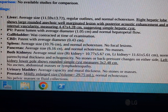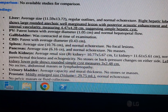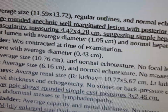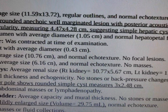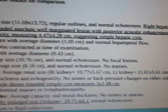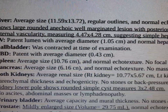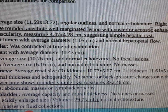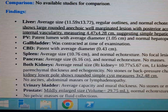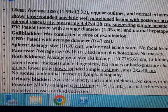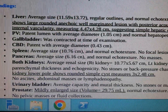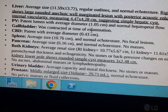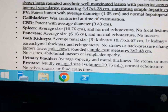Liver: according to the measurement it shows large rounded, well-marginated lesion with posterior acoustic enhancement and no internal vascularity. That is visible on the color Doppler — that measurement is a simple hepatic cyst. A cyst inside the right lobe of the liver.